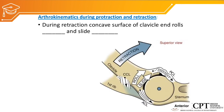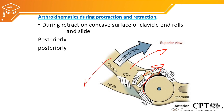During protraction and retraction of the clavicle on the sternum, the saddle-shaped joint has both concave and convex surfaces on both articulating surfaces. The clavicle has a concave surface horizontally and a convex surface vertically; similarly, the sternum has a convex surface horizontally and a concave surface vertically. During retraction the clavicle moves posteriorly and sliding is also in the same direction, because the concave surface of the clavicle is moving on the convex surface of the sternum. During protraction, the clavicle moves anteriorly and sliding is also anteriorly.